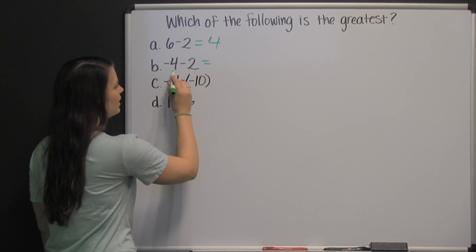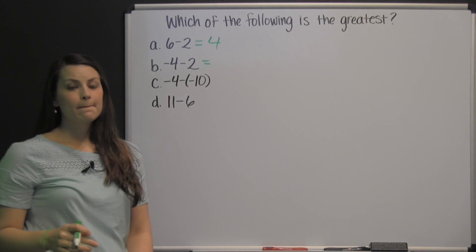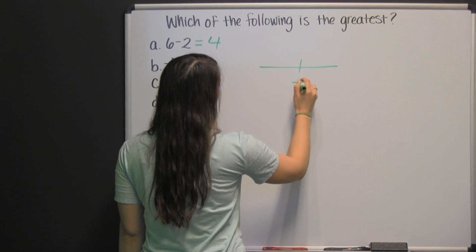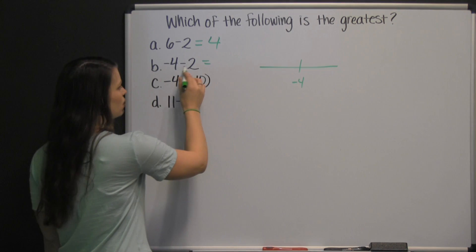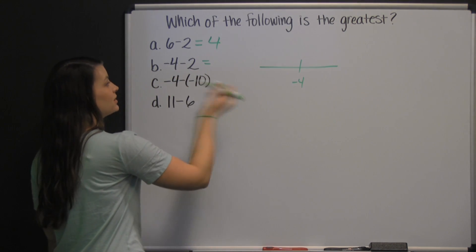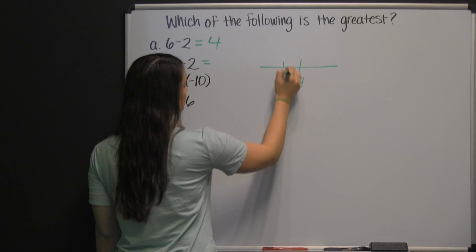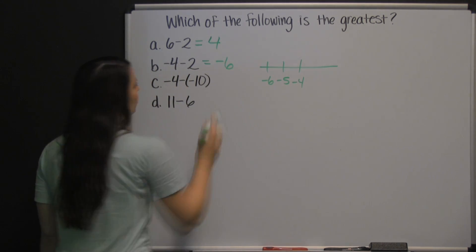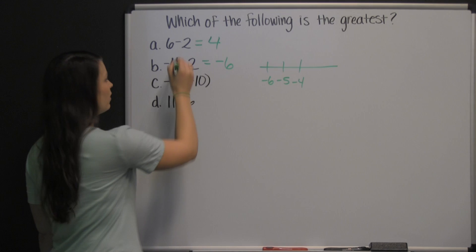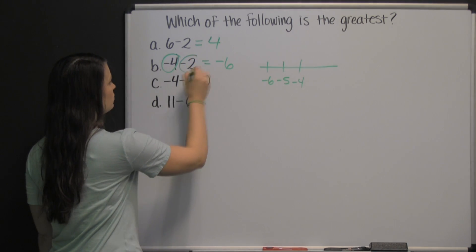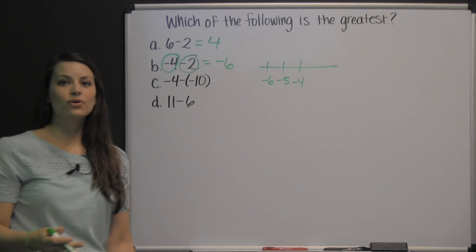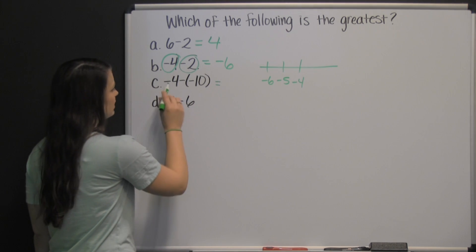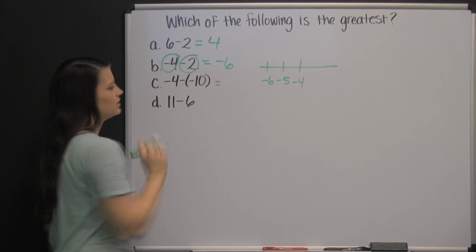Then we have negative four minus two. You can think about this on the number line. You're starting at negative four on the number line, and then when we subtract, our number's getting smaller, so we're moving to the left two places. That'd be negative six. Or the way I like to think about it is you have four negatives and two more negatives, which is a total of six negatives. C is negative four minus negative ten.